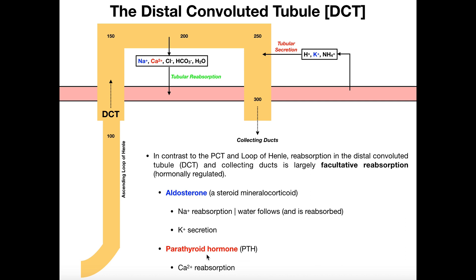Another hormone that acts here is parathyroid hormone or PTH. Recall from the skeletal chapter that PTH was important in maintaining blood calcium. It doesn't just act on the bones causing resorption there - it will actually trigger reabsorption of calcium from the distal convoluted tubule back into the blood, increasing blood calcium levels, which is critical for muscle contraction and blood clotting. Other things reabsorbed from the DCT include chloride, bicarbonate, and water, which mainly follows the sodium.